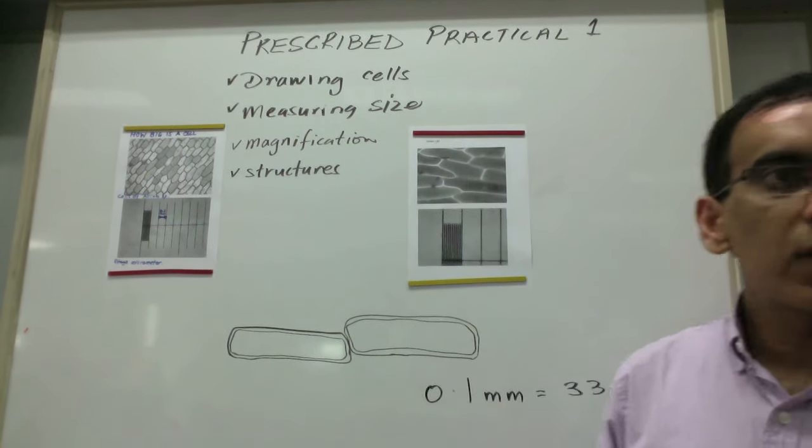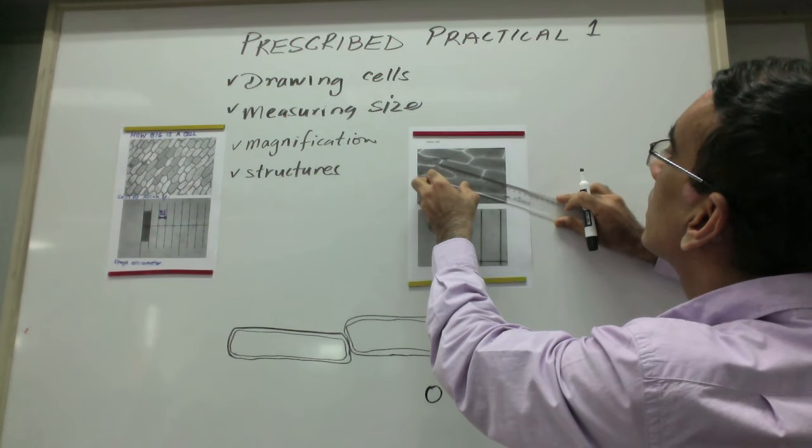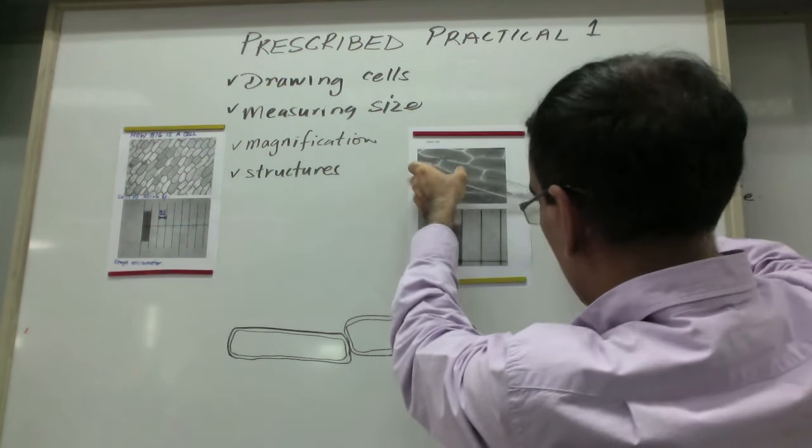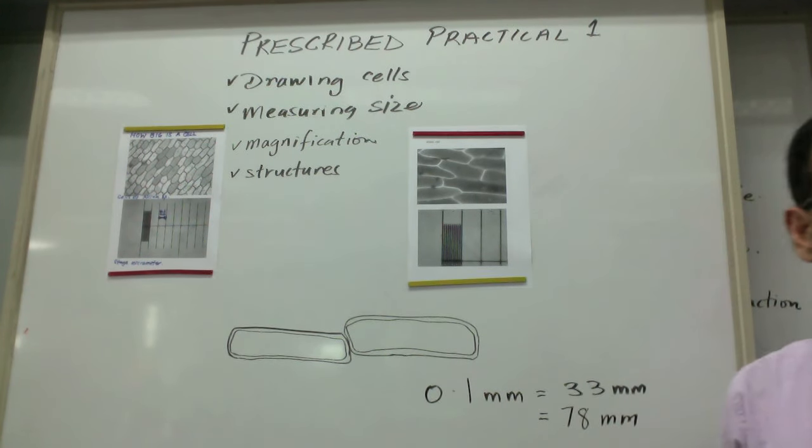So we're trying to measure the longest distance across the cell, taking this cell, measuring the longest possible distance straight across and it comes to 78 millimeters.